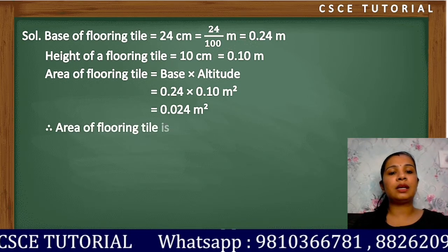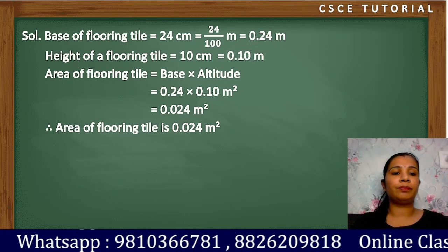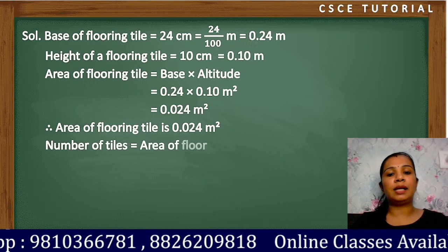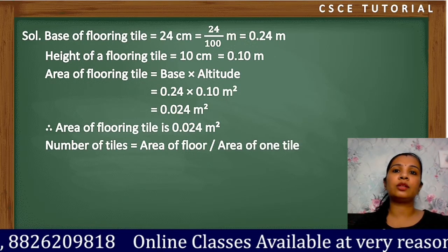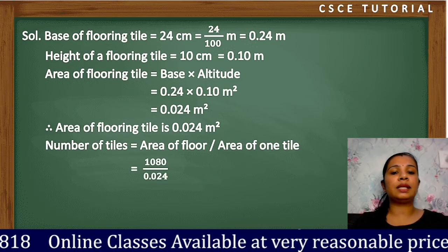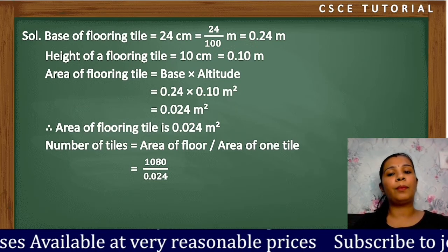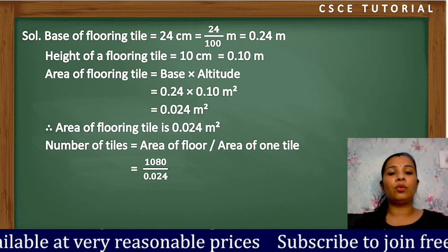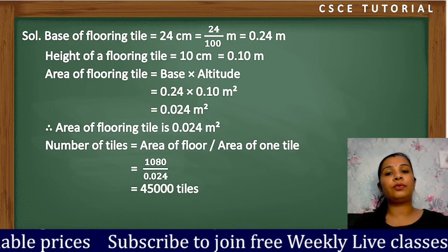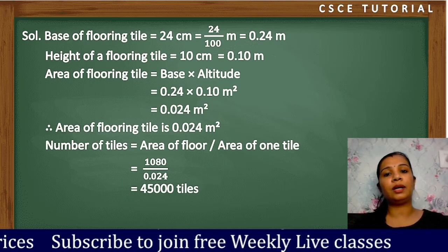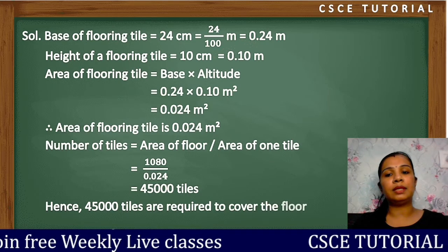Area of one flooring tile is 0.024 square meters. To find the number of tiles, we divide the area of the floor by the area of one tile: 1080 ÷ 0.024 = 45,000 tiles. Therefore, 45,000 tiles are required to cover the floor.